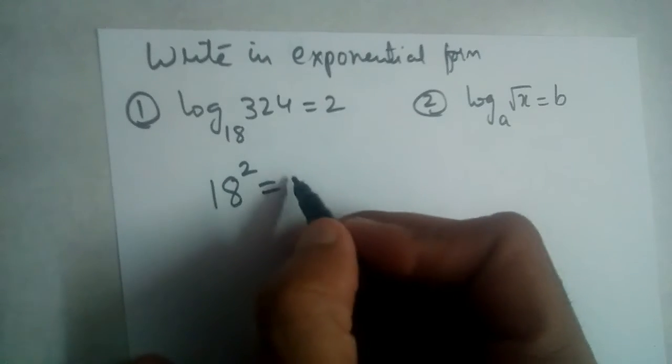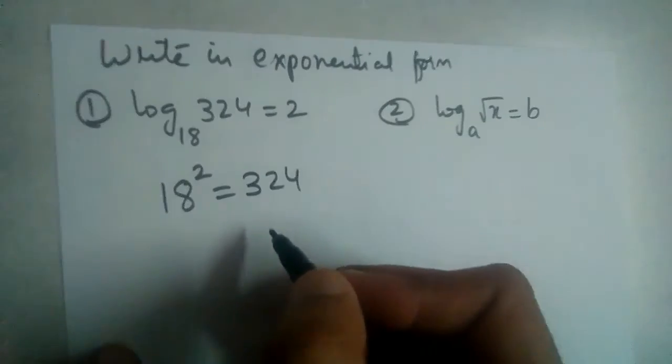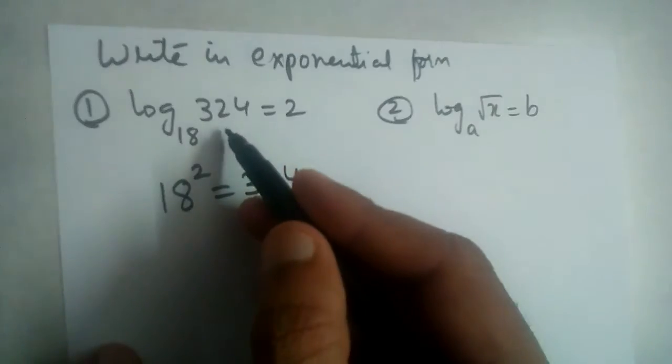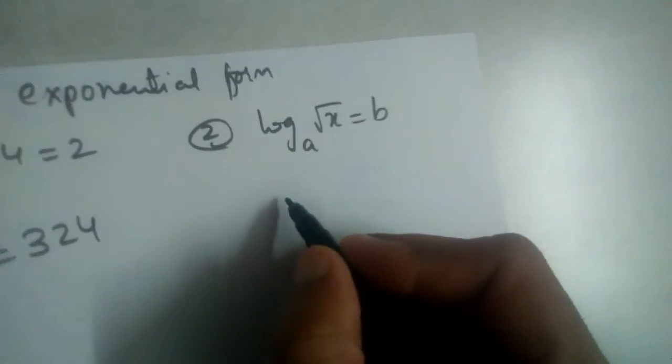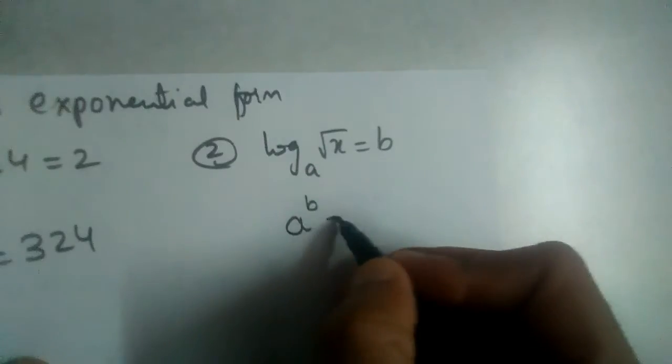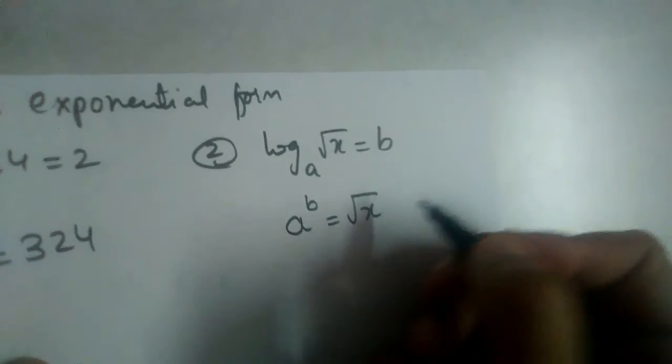Or 18 power 2 should be 324. Okay, this is exponential form of this. And base is a, power should be b, and the number should be here, right?